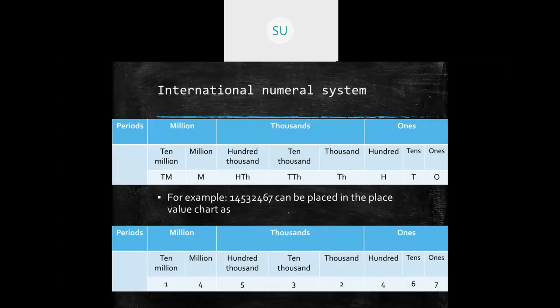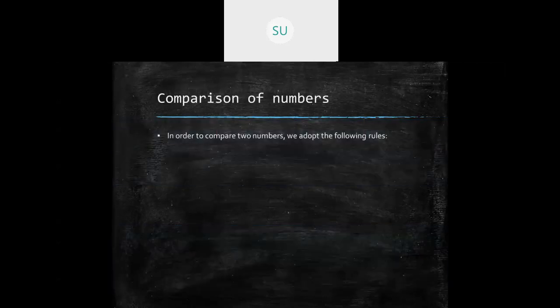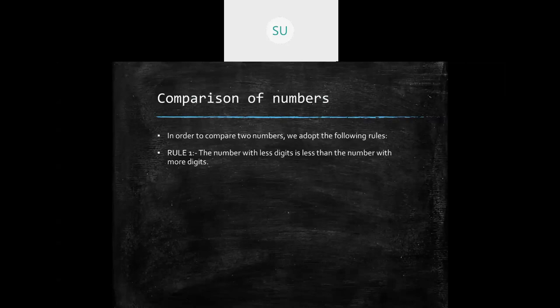We then wrote numbers in figures and words using both numeral systems. We also studied comparison of numbers. To compare two numbers, the first rule is: the number with fewer digits is less than the number with more digits.